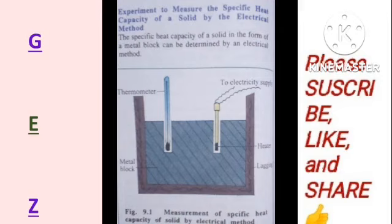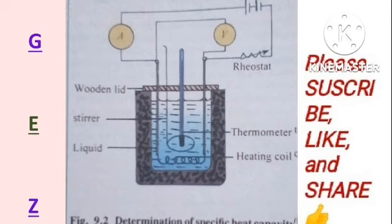This is how to measure the specific heat capacity of a solid by the electrical method. Now let's talk about another method of determining the specific heat capacity of a substance — in this case we are dealing with a liquid. We are making use of the electrical method to measure the specific heat capacity of a liquid.